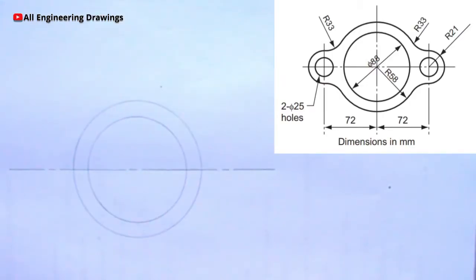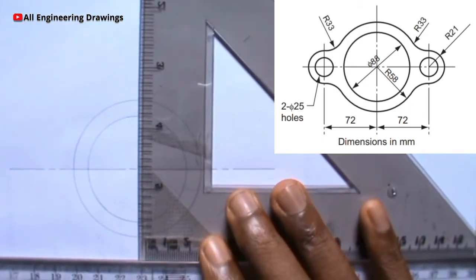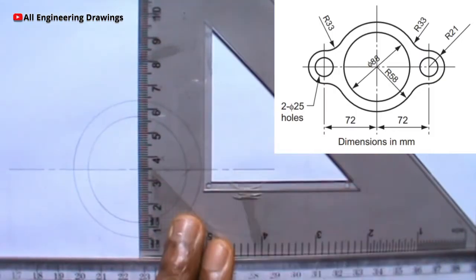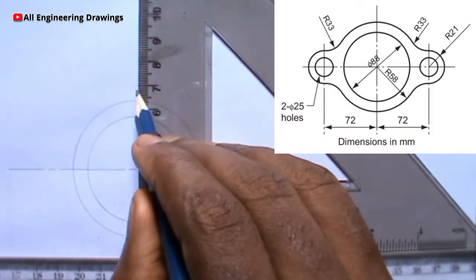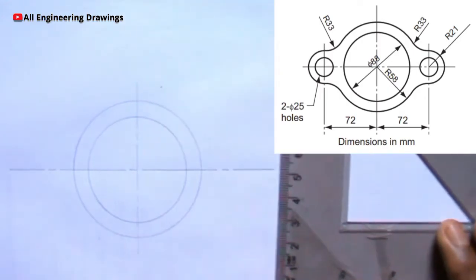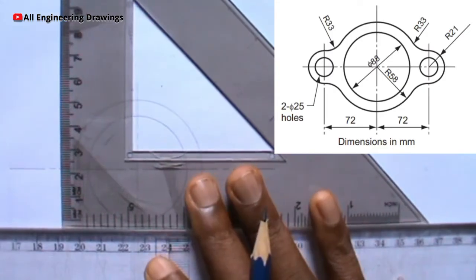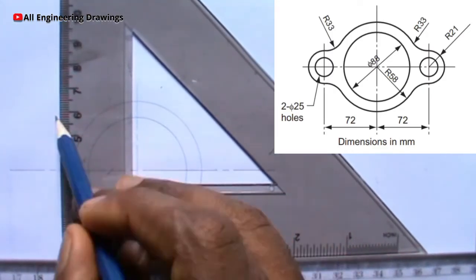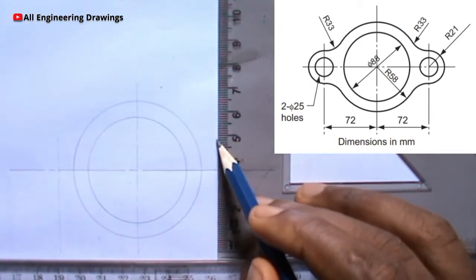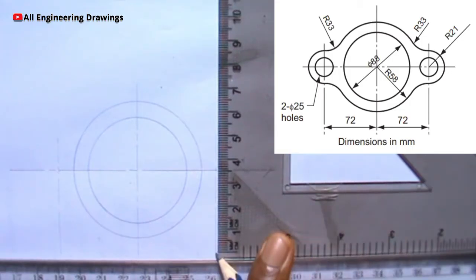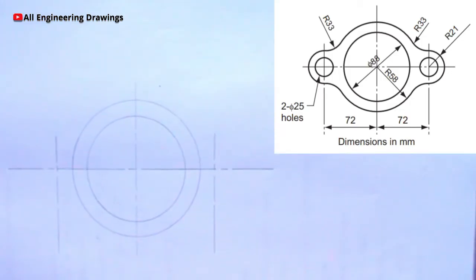Now draw a vertical line passing through the center of the circles. Then draw vertical lines 72mm from that vertical line, one on either side. The distance from the left line to the center line should be 72mm, and the distance from the center line to the right line should also be 72mm.